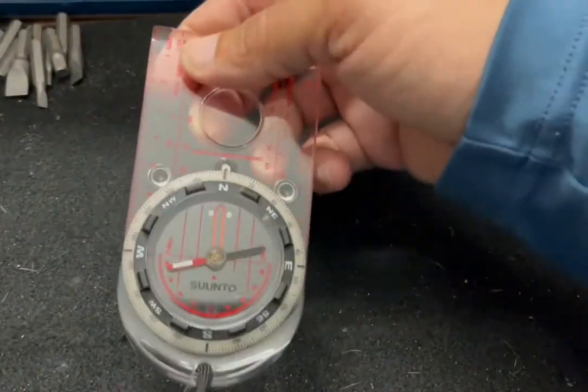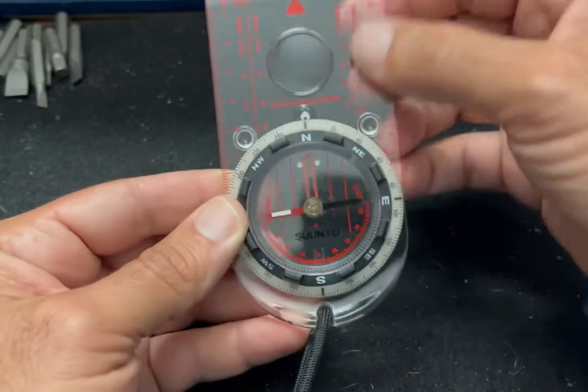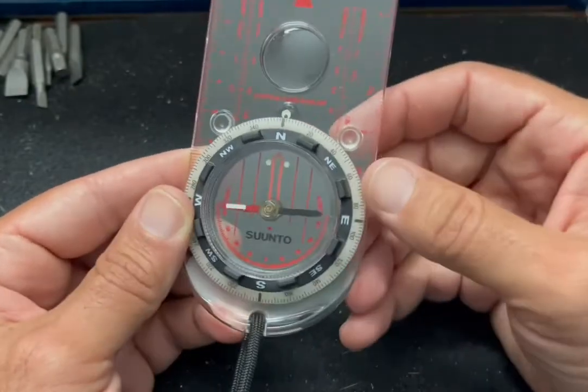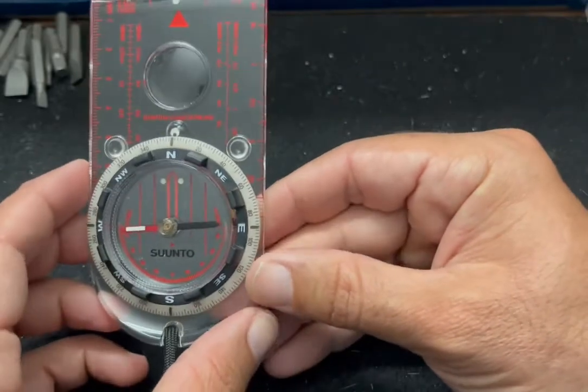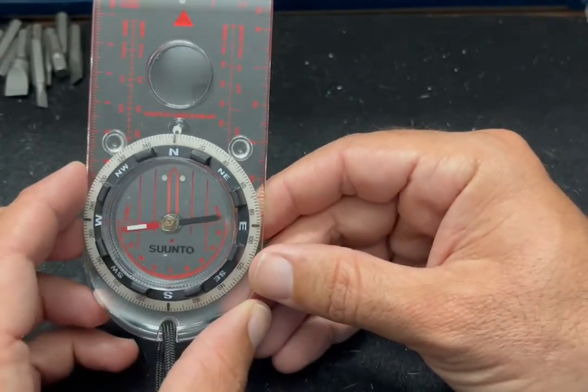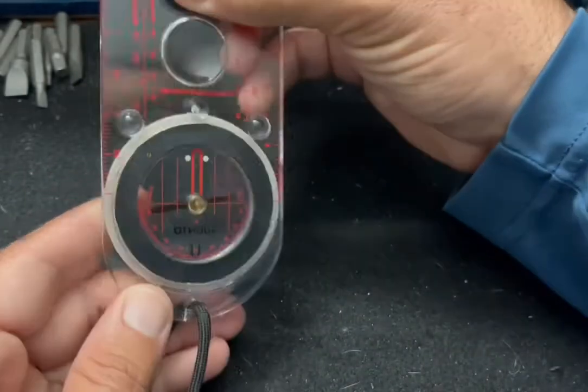Anyways, let's get going. I want to show you guys some cool features about this compass. Starting off, this is clear plastic. You have on the compass two rubber nipples, so you might be asking yourself what are the rubber nipples?